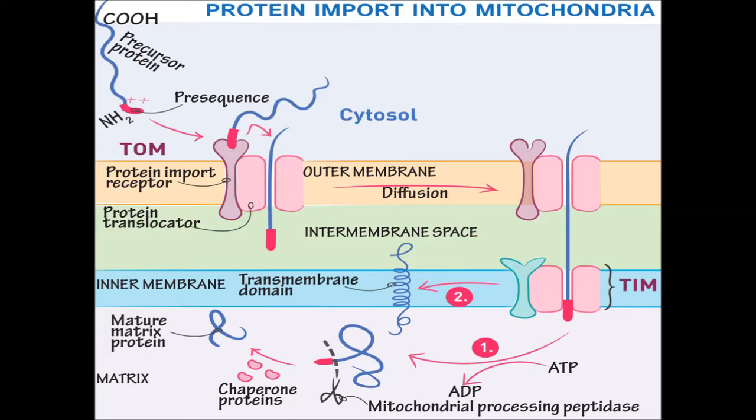The pre-sequence translocase 22, or TIM22, binds preprotein exclusively destined for the inner mitochondrial membrane. Mitochondrial matrix targeting sequences are rich in positively charged amino acids and hydroxyl ions.